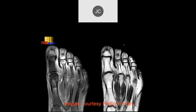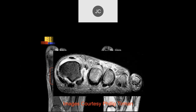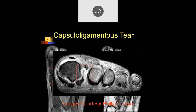An athlete with great toe pain shows fluid in the first proximal interphalangeal joint — probably physiologic. There's thickening and irregularity of the lateral ligament with fluid and edema in that area. This is a capsule-ligamentous tear of that first metatarsophalangeal joint.